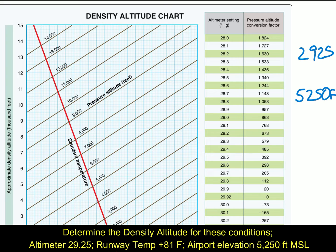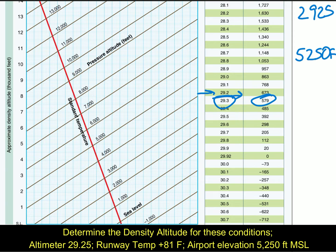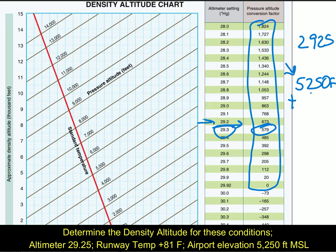With an altimeter setting of 2925, we look on the chart. 2925 is between 292 and 293. For the sake of the chart, I round up to the next highest number, which gives you a correction of 579. Since it's on this side of the chart, the correction is a positive number, so you take your airport elevation and add 579, giving you 5829.